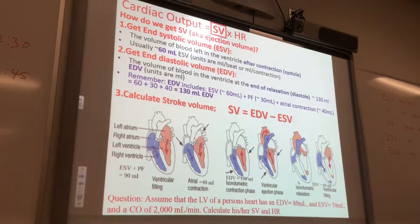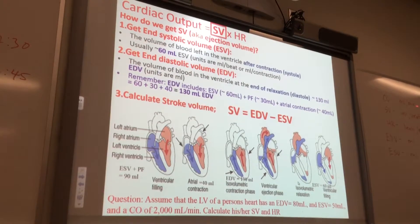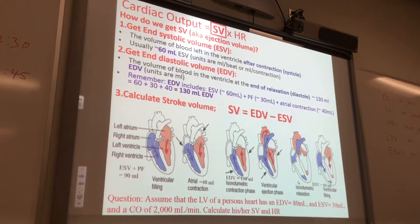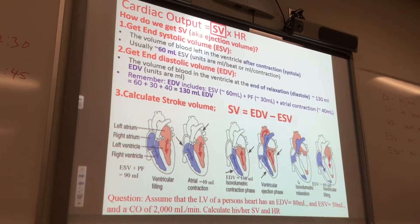Cardiac output — the units are mils per minute. Stroke volume — mils per beat. Heart rate — beats per minute. EDV and ESV are mils.